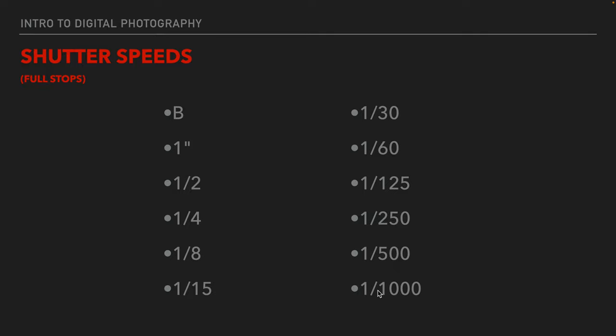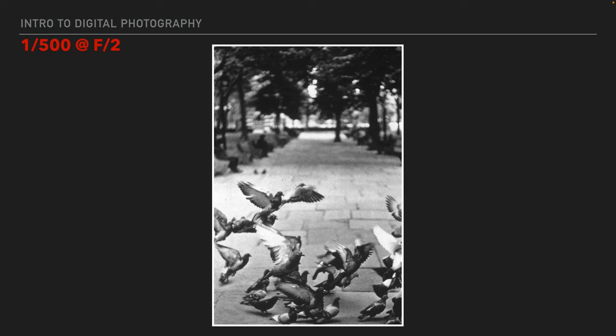And so on and so forth to whatever your maximum shutter speed is. Some cameras will have a thousandth, some may have two thousandths, some might have four thousandths, some might have one eight-thousandth of a second. These are the full stop shutter speeds.